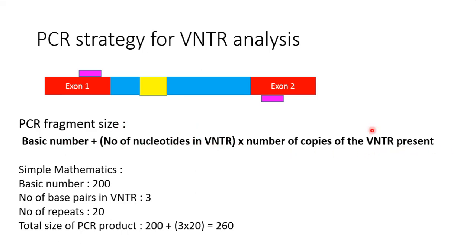The region between the two primers, excluding the VNTR region — shown as the blue region — gives us the basic number, which does not vary from person to person. The number of repeating nucleotides, whether two or three, is specific to each VNTR, and the number of copies present varies. So the fragment size equals: basic number + (number of nucleotides in the VNTR × number of copies of the VNTR).